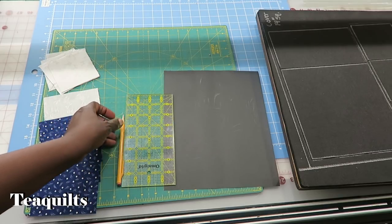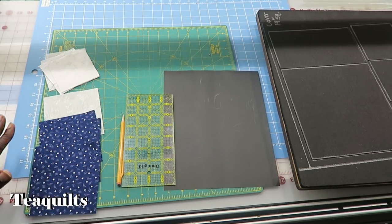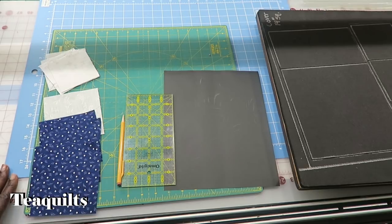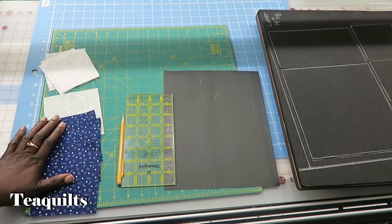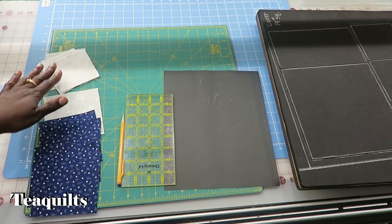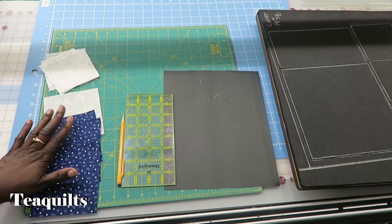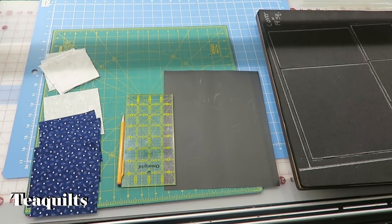I do have other equipment that I'm using. I'm actually using my die cutting system because I only need two sizes of units: four and a half inch squares and three and a half inch squares. So let's talk about the cutting.